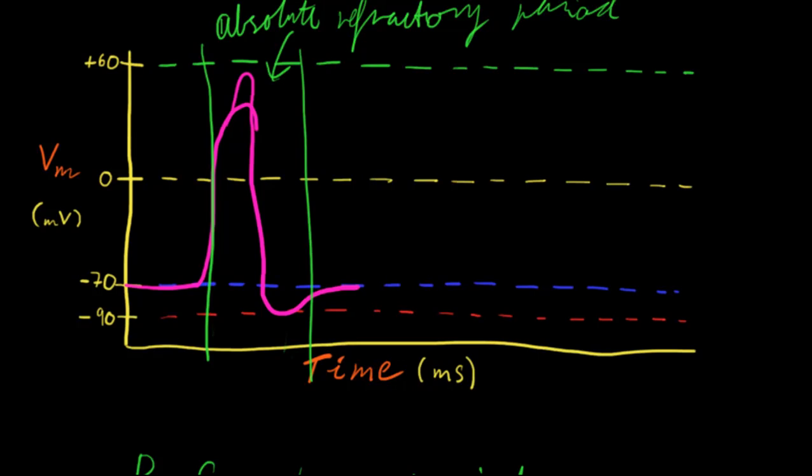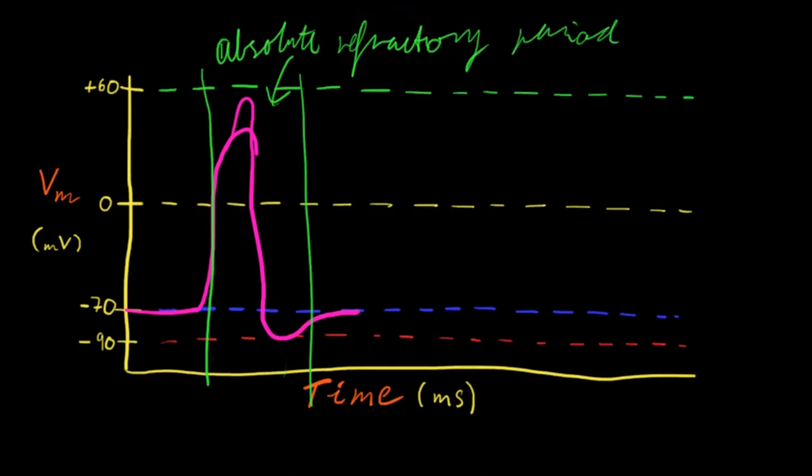This absolute refractory period is actually followed on by the relative refractory period. As we saw in 7a, the sodium ion channels are a lot quicker to act, open and close, than the potassium ions, which are a bit sluggish. And due to that, we actually see that it takes, so say this was the threshold level...